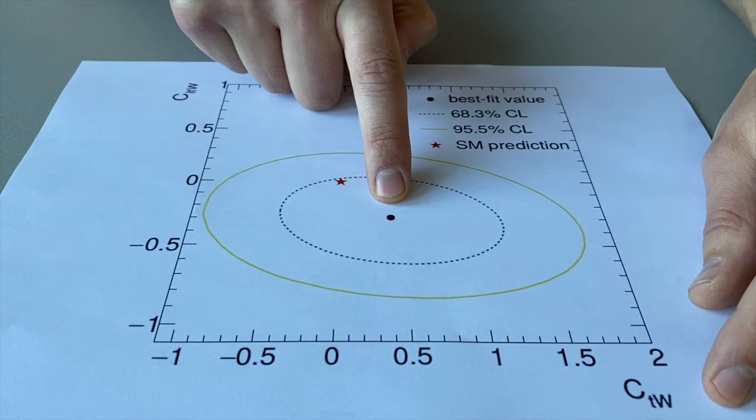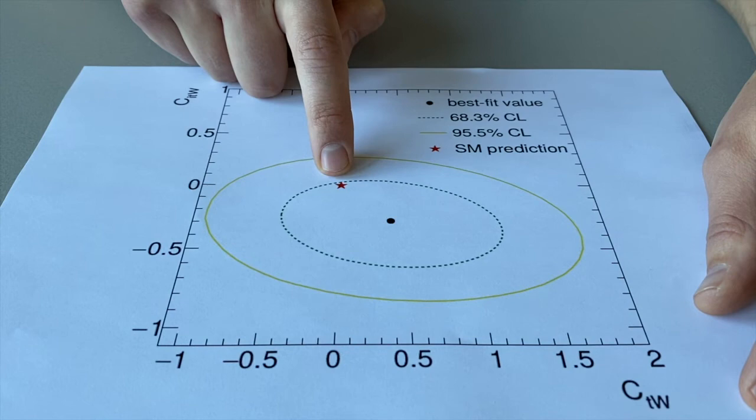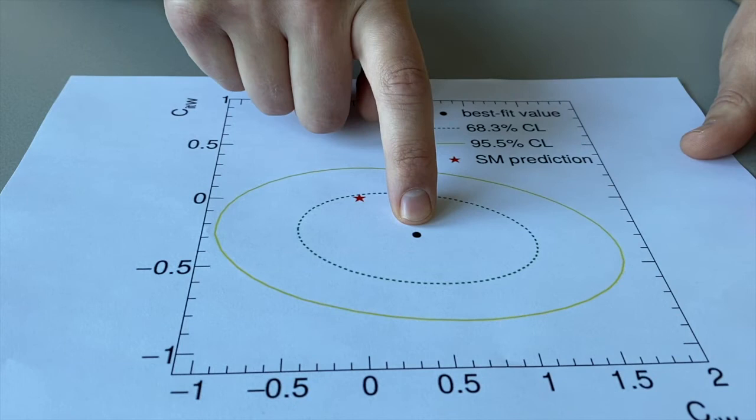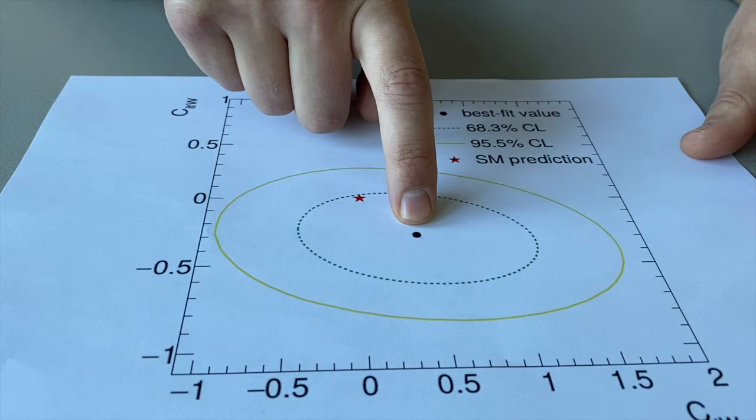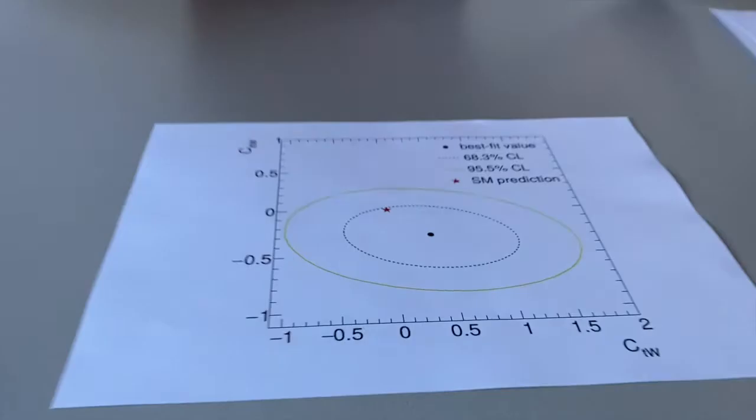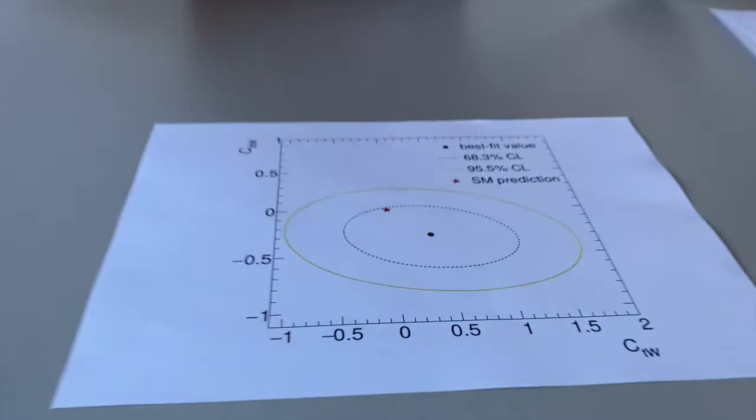So what I measured is this black dot over here—the black dot is my measurement result, and the red star is what the standard model predicts. So I don't measure the standard model exactly, but it's within this green band, so it's within its uncertainty. But if my result is true, the top quark contributes to an asymmetry between matter and antimatter, and for that reason our universe is dominated by matter.